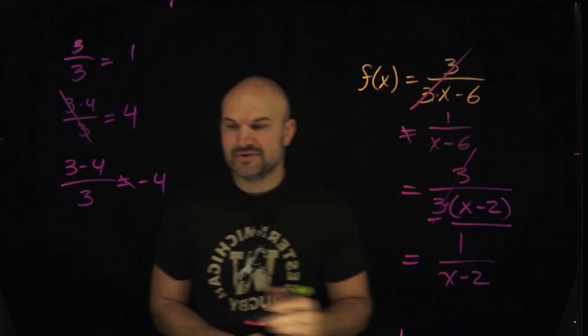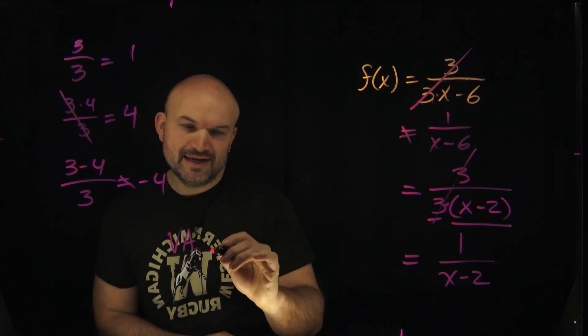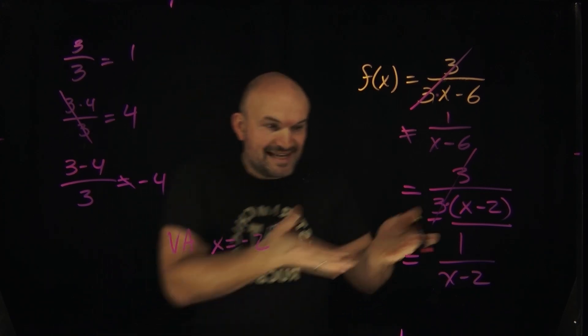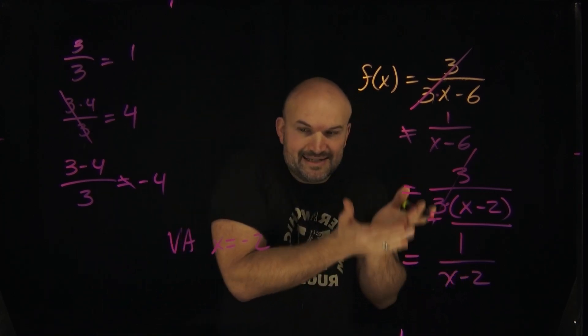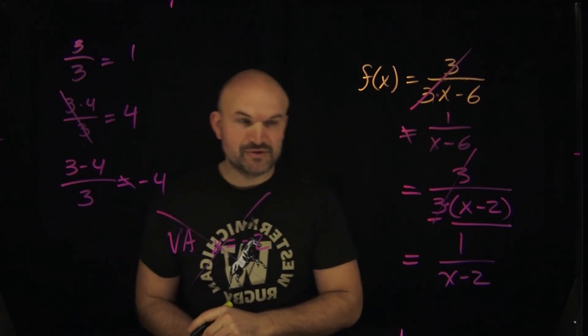Now, mistakes still happen. Students will say that the vertical asymptote is at x equals negative 2, because they see x minus negative 2. But that is not correct. Don't do that.